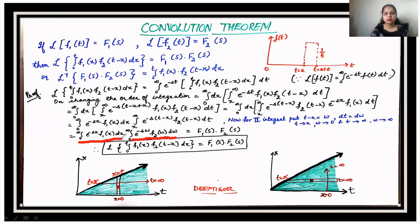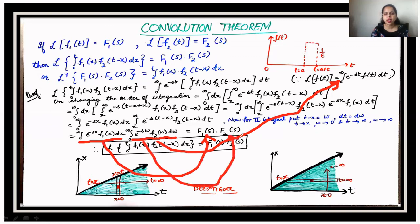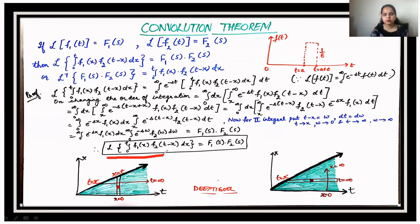We now have two independent integrals, each of which is the basic definition of the Laplace transform. The first integral — from 0 to ∞ of e^(−sx)·f₁(x) dx — equals F₁(s), and the second integral — from 0 to ∞ of e^(−sw)·f₂(w) dw — equals F₂(s). This proves that the Laplace of the integral from 0 to t of f₁(x)·f₂(t−x) dx equals F₁(s)·F₂(s), completing the proof of the convolution theorem.